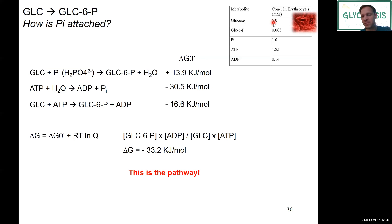So from these calculations, thermodynamically, this is our pathway. We're not using inorganic phosphate — we're much more likely using ATP as our donor for the phosphorylation of glucose.